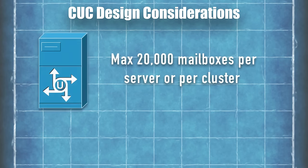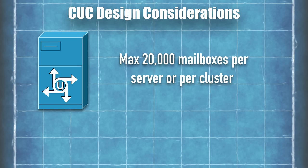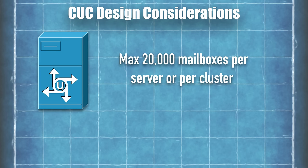From a design perspective, a single Cisco Unity Connection server supports a maximum of 20,000 mailboxes. This works differently than Communications Manager. With CUCM, you can add servers to get more capacity — a higher-end server might support 7,500 users, and adding another gives you another 7,500. With Cisco Unity Connection, you can have a cluster of two servers, but the maximum number of mailboxes is still 20,000. Adding a second server does not increase mailbox capacity.